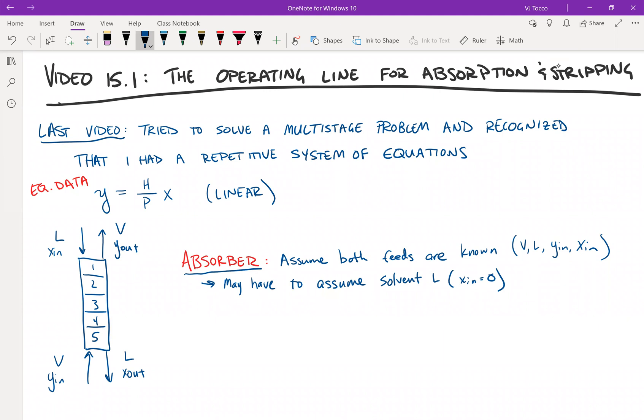If we're doing an absorption process, remember, this is when the goal is to clean the gas. So typically, in an absorption column, the problem should specify what y_out is going to be.